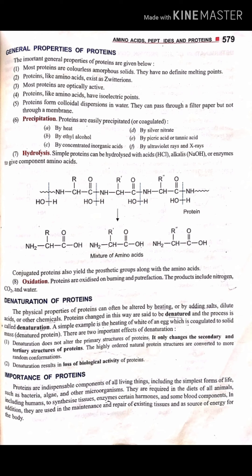Proteins are colorless amorphous solids with no definite melting point. Regarding chemical properties, proteins can be precipitated by heat, ethyl alcohol, silver nitrate, picric acid or tannic acid, and strong acids. These agents will easily cause protein precipitation.